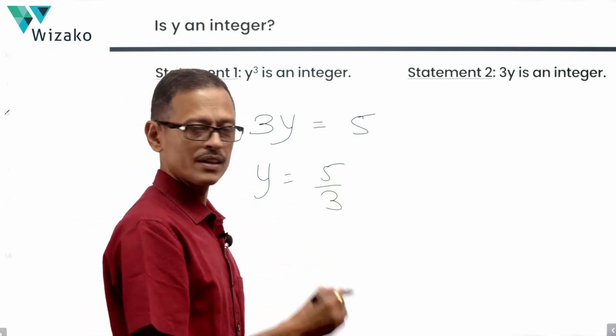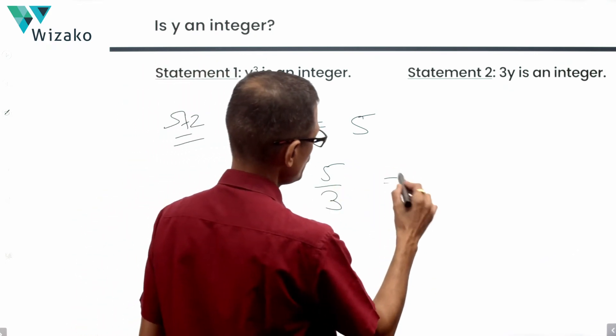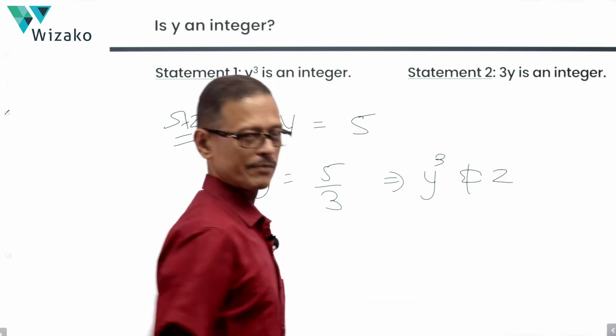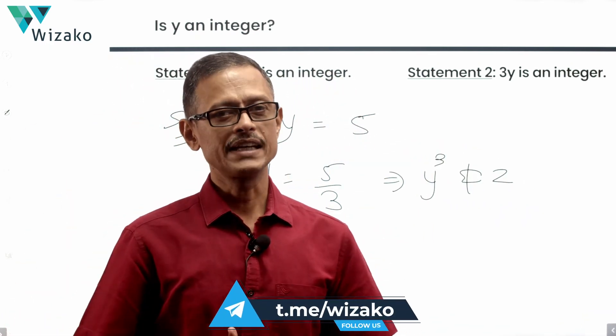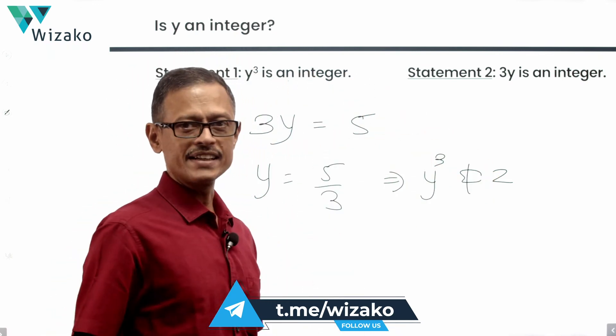Now, y is a fraction. If y is a fraction, obviously, y cube cannot be an integer. y is given as a fraction. There's no way y cube can be an integer. But statement 1 wants y cube to be an integer.